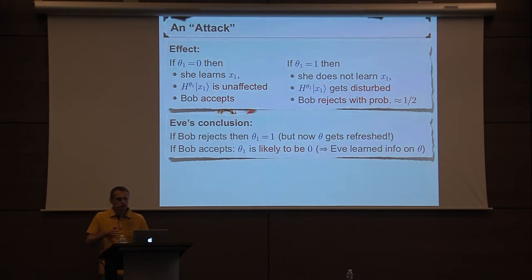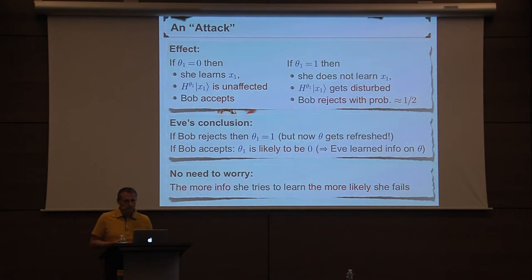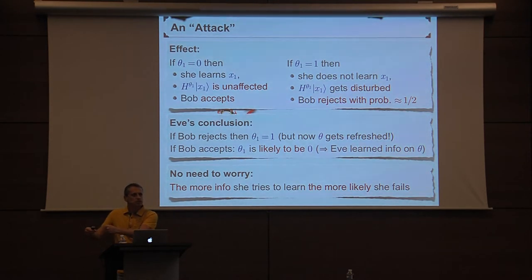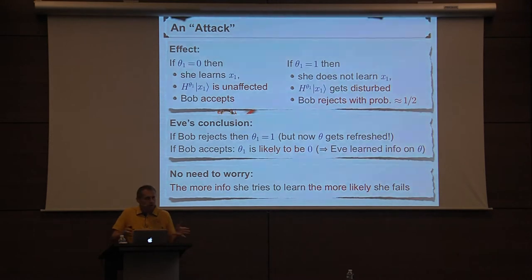Intuitively, this should not worry us, because if Eve tries to gain more and more information on theta by repeating the attack, pretty soon she's going to be detected — Bob is going to reject with probability one quarter every time she launches the attack. And as soon as he rejects, they throw away theta and replace it with a fresh choice, so all the information Eve gained on theta becomes useless.